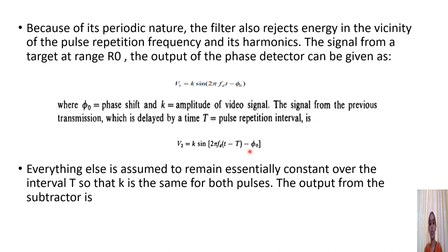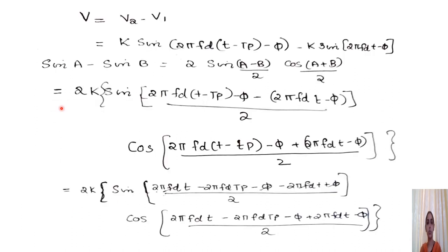The delayed signal from the previous transmission is delayed by pulse repetition interval T. In the subtractor circuit, V2 minus V1 is computed. Everything else is assumed constant over the pulse repetition interval, so the amplitude K is the same for both pulses. The subtractor output V equals V2 minus V1, and applying the trigonometric identity sin A minus sin B equals 2·sin((A−B)/2)·cos((A+B)/2) to solve the subtraction.